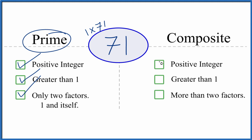Let's see if it's a composite number. It is a positive integer. It's greater than 1. Does it have more than two factors? And it only has two factors.